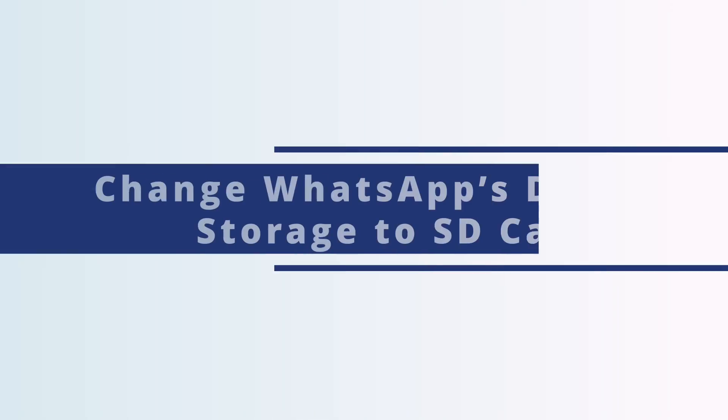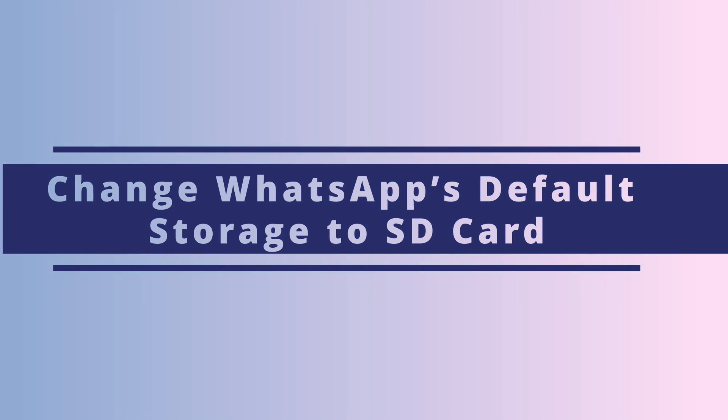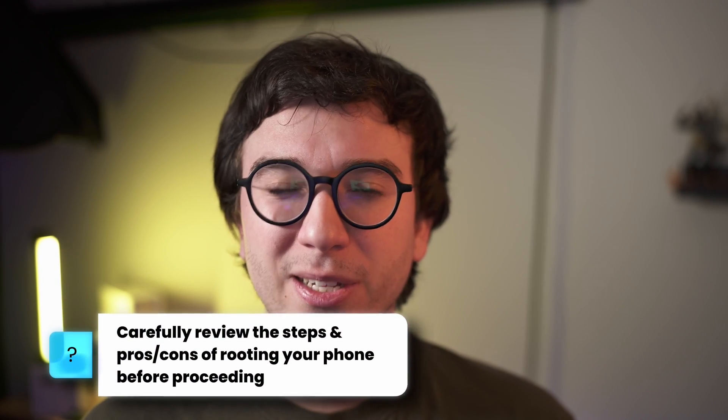Now up until this point we've shown you how you can copy your WhatsApp data to your SD card as a backup, but how can we actually change the default location where WhatsApp saves its data? Unfortunately the answer isn't so simple, as it requires an Android device that's been rooted. The methods and complexity for rooting your device depends on your brand and model, and there are a couple of security considerations to keep in mind before proceeding.